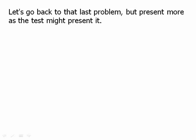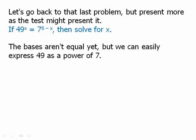Let's go back to that last problem, but present it as the test might present it. They might give you something more like this: If 49 to the x equals 7 to the 6 minus x, then solve for x. So notice that the two bases on each side of the equation, they are no longer equal. We have two different bases. But of course, this still isn't that bad. We just have to recognize, of course, that 49 can be expressed as a power of 7.